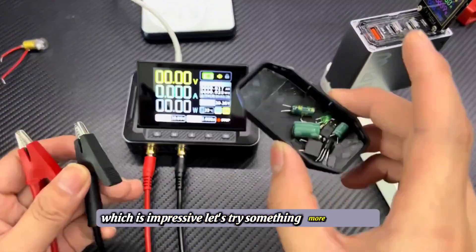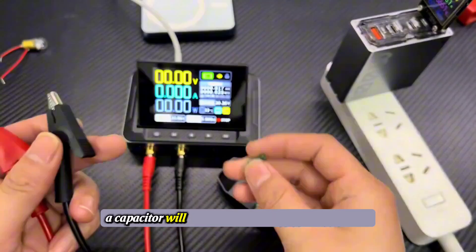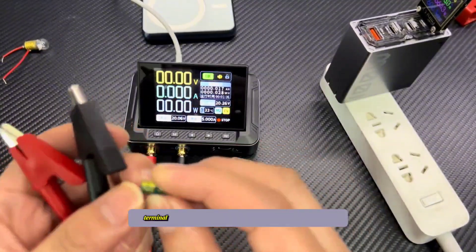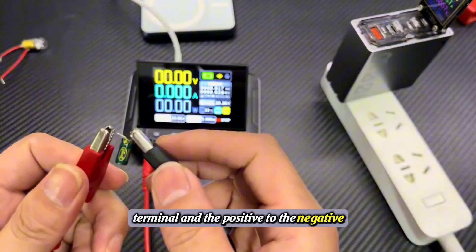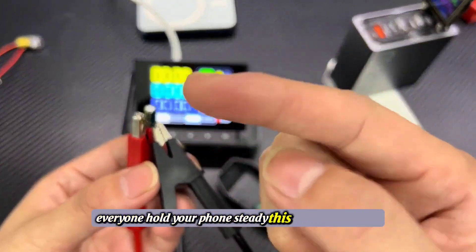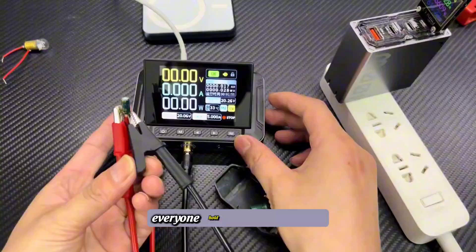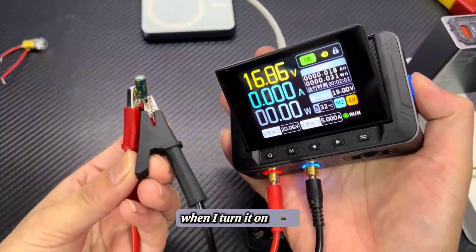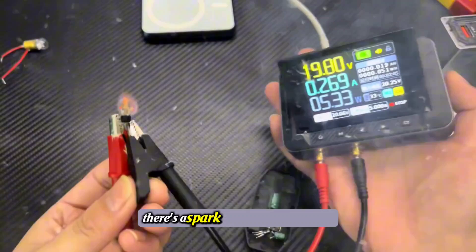Let's try something more exciting. What happens if we reverse a capacitor? We'll connect the negative to the positive terminal and the positive to the negative. Everyone, hold your phone steady. This could get intense. When I turn it on, bam! There's a spark. That was quite a show.